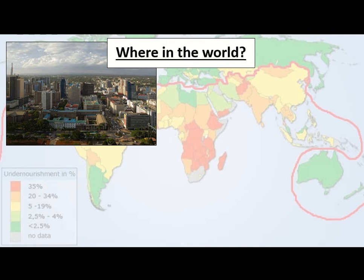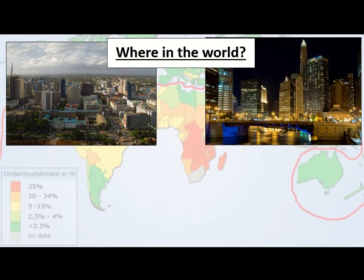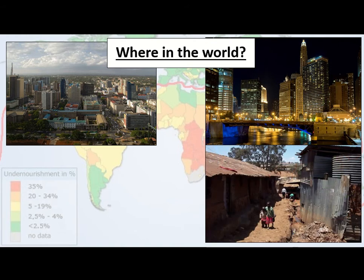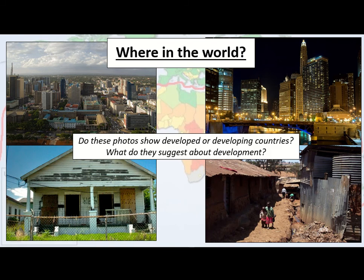There are some images here. I'd like you to tell me firstly where in the world you think each one might be, and whether you think it's a developed, less developed, developing, or emerging world country. Looking at these photos — do these show developed or developing countries? Well, they show a bit of both actually, and they show a bit of difference between these different countries.